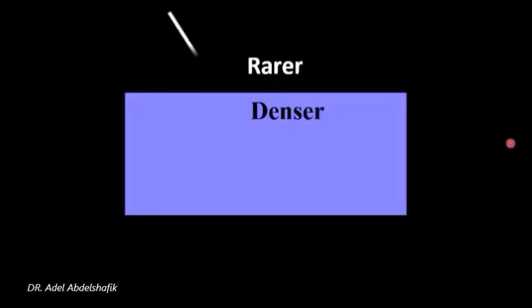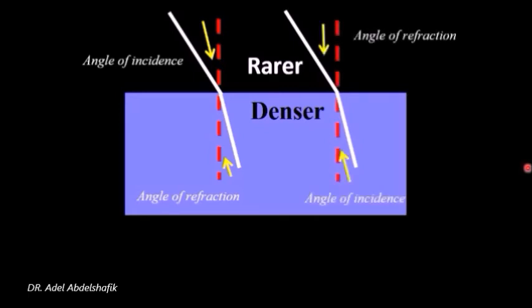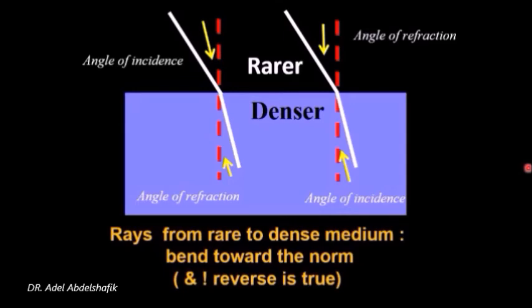When rays are coming from rarer to denser media they are going to refract toward the normal. This is the angle of incidence. This is the angle of refraction. On the other hand, the rays coming from denser to rarer media will be refracted away from the normal. So keep in mind that rays when passing from rare to dense media bend toward the normal and the reverse is true when the rays are coming from denser to rarer media.